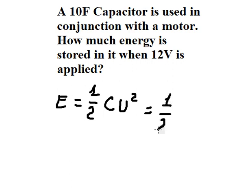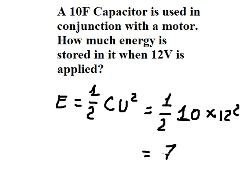So C is about 10 μ, that is about 12, and we have 720 μ. This is the final answer. This is the end — thank you for watching.